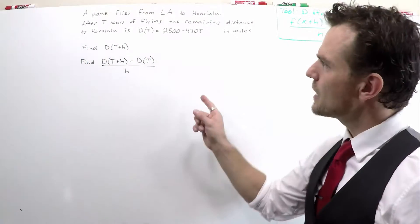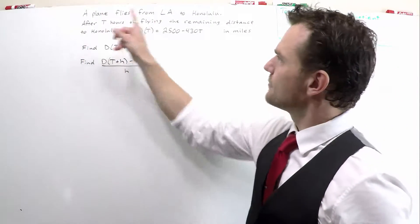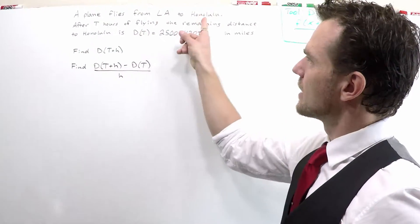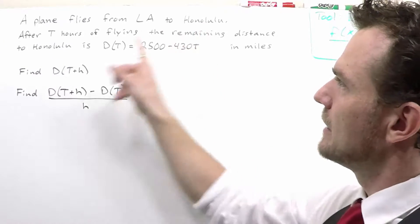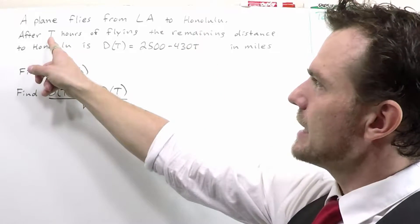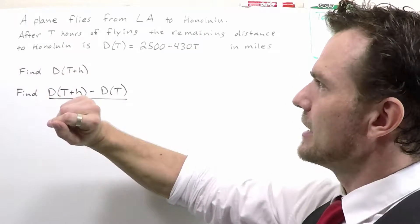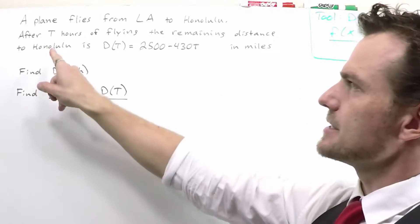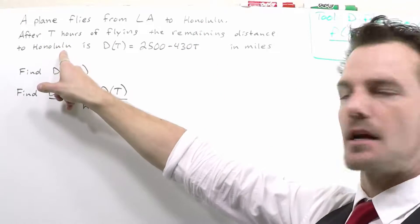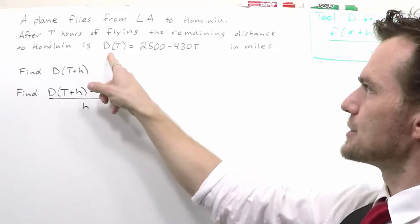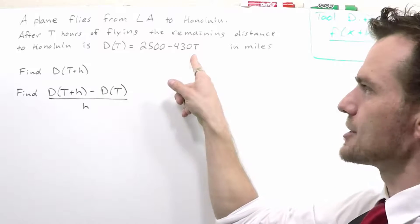In this problem we have a plane that flies from LA to Honolulu. After T hours of being in flight, the distance it remains to get to Honolulu is represented by this function.